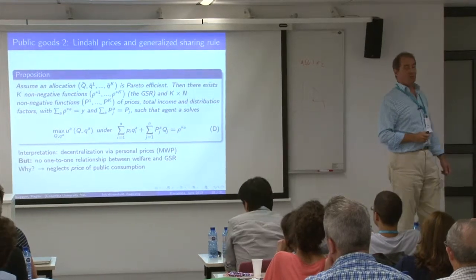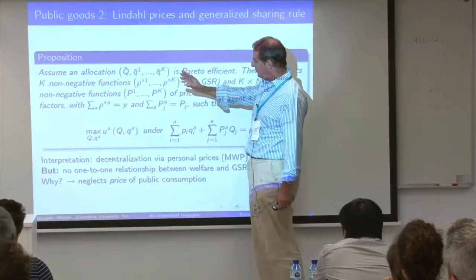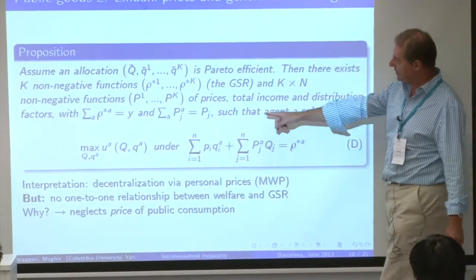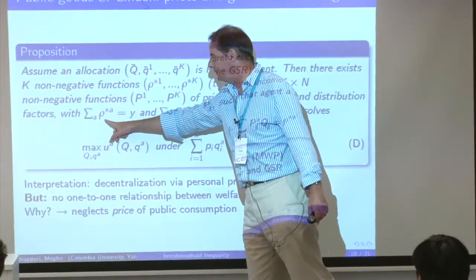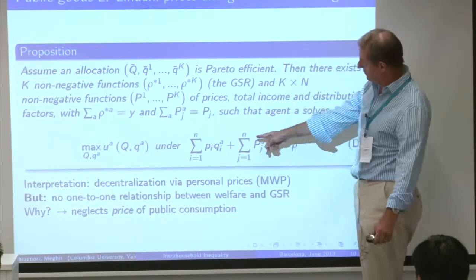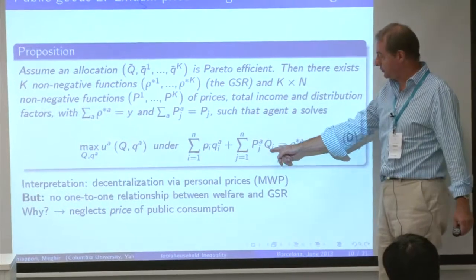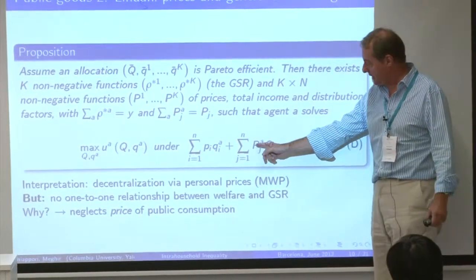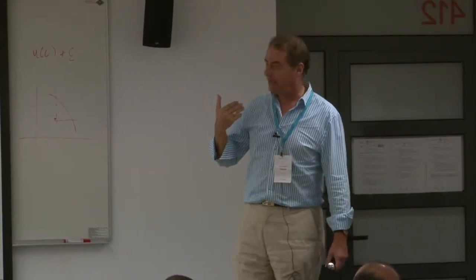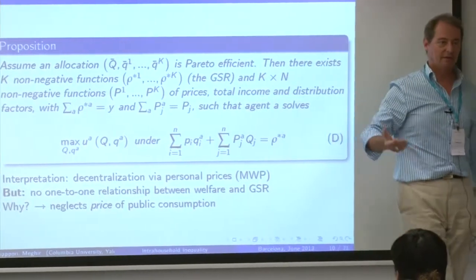Another way of decentralizing — equivalent to Pareto efficiency — is to use Lindahl prices. For the public good, I define personal prices. Each person's budget constraint shows that their income share covers their private good at market price plus their personal price for the public good. Any efficient allocation can be decentralized using Lindahl prices; conversely, if individual prices sum to the market price, the outcome is efficient. So one candidate for inequality is the Lindahl-income concept.